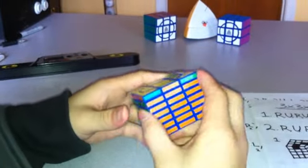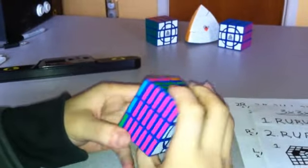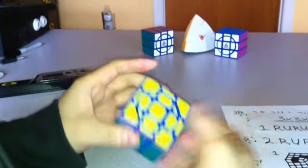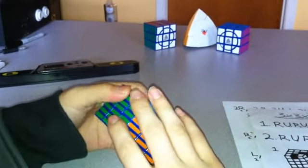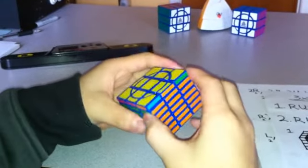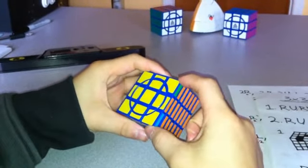First, I want to see which corners are correct, and as I'm looking, none of them are. So I can start anywhere, actually, and I'm going to use the same algorithm I used previously to rotate these two corners.